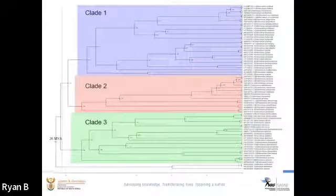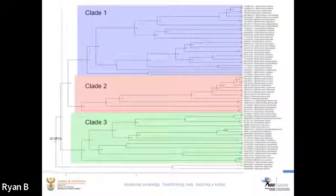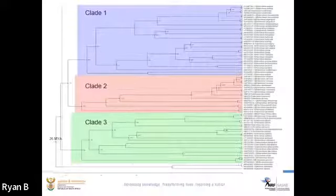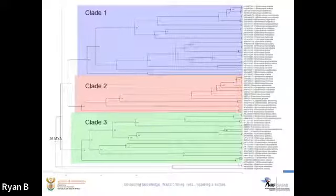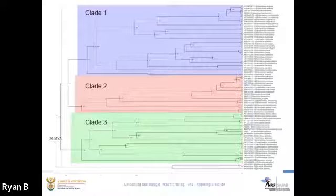Clade one appears to be the more robust species and includes quite a few of the orphans. Clade two is medium-sized in general and includes softray and sawfin barbs. Clade three are generally the smaller species, but there are a couple of large ones, and they are all softrays except for a few spinyfins. These do not form natural groupings.